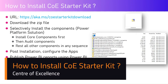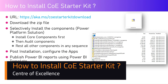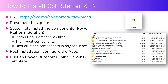In this video I'm going to show you how to install the CoE Starter Kit from Microsoft. You need to visit aka.ms/CoEstarterkit. The moment you hit this URL, a zip file will get downloaded into your system. The zip file is named CoE Starter Kit dot zip, and once you extract that zip file into a folder, you will see a whole bunch of solutions in it.